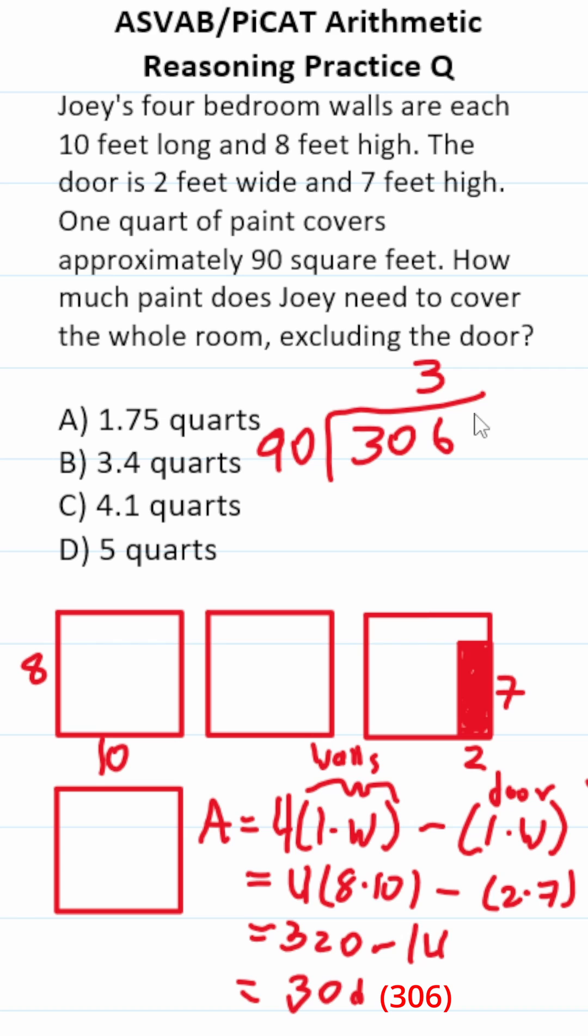This is going to be 3. 90 times 3 is 270. Subtract this out. This is going to be 6. You have to cross this out and carry this. This becomes 3. 90 doesn't go into 36, so add a decimal. Bring that decimal into your answer. Drop down that zero placeholder. This is going to be 4.